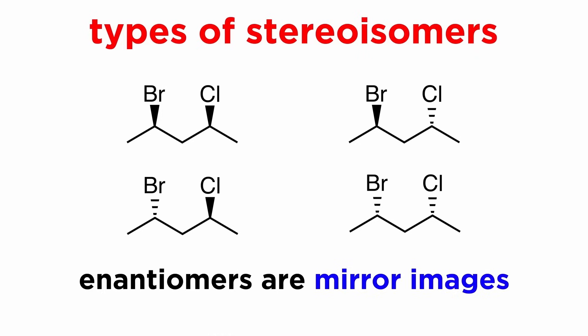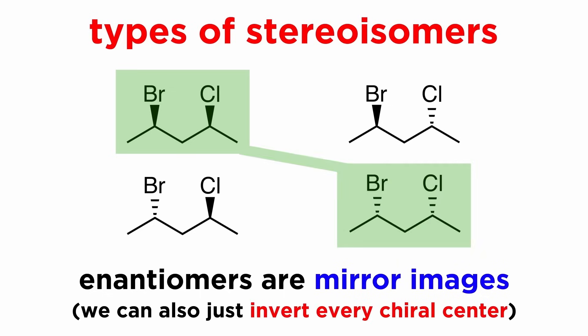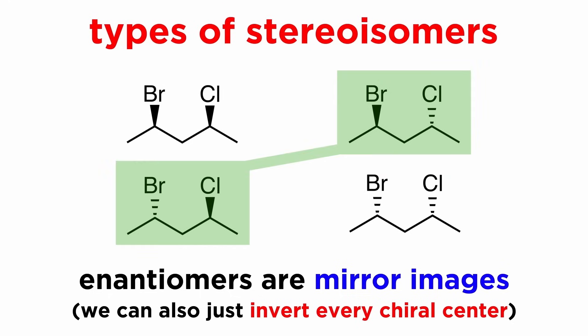However, as we said, enantiomers are specifically mirror images. When we take the mirror image of a molecule like this one, instead of literally drawing the mirror image, we can also just change every wedge to a dash and every dash to a wedge. So that means that these two molecules are enantiomers of one another, and these two are enantiomers of one another.